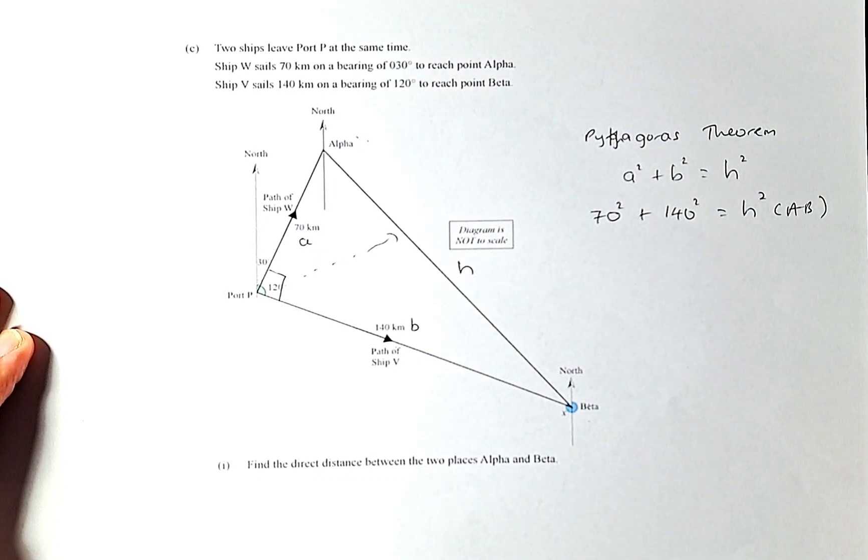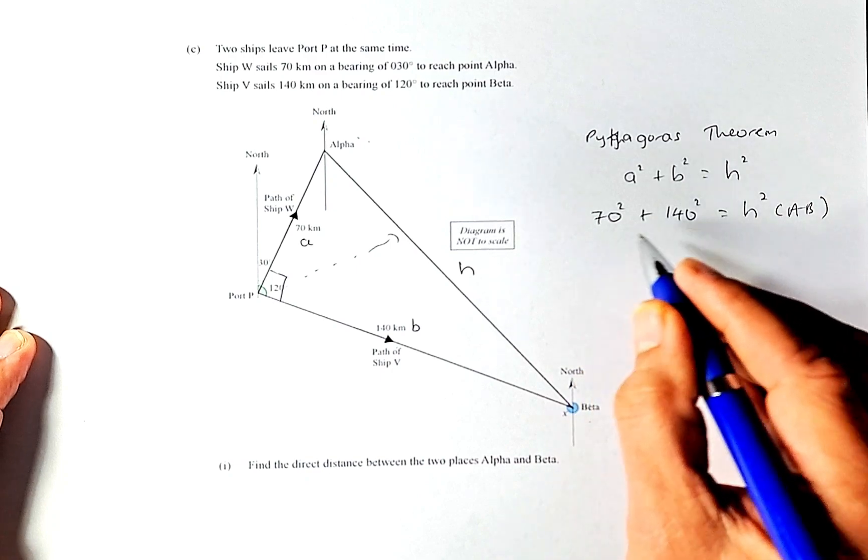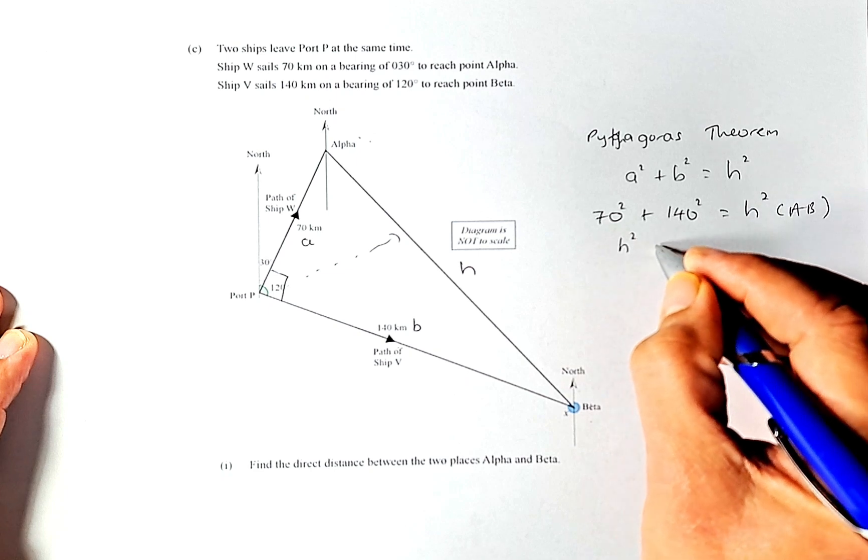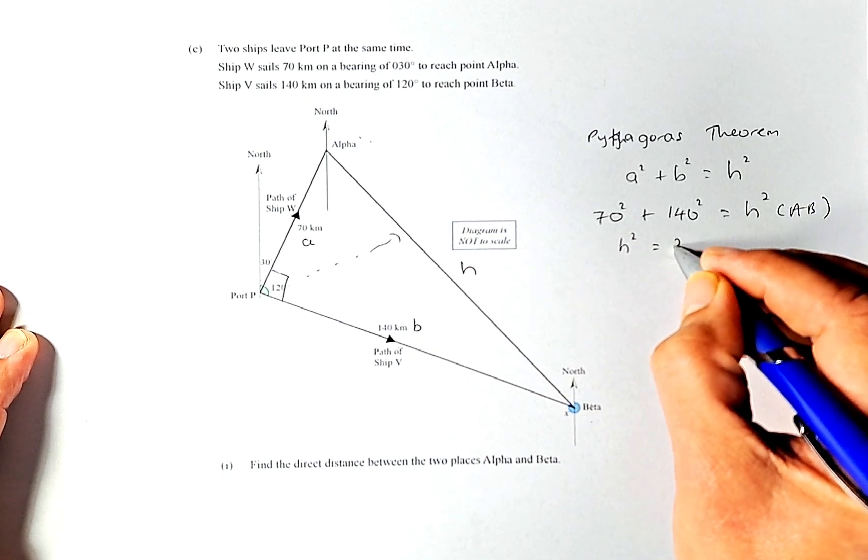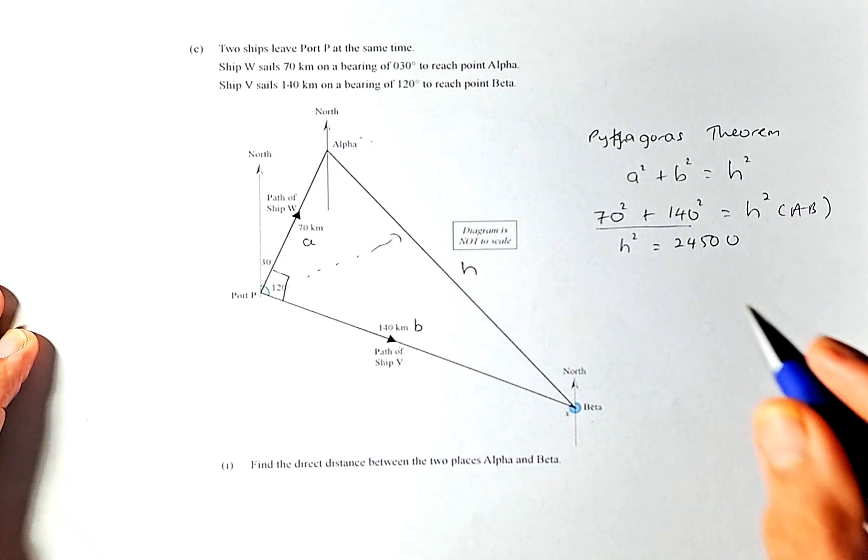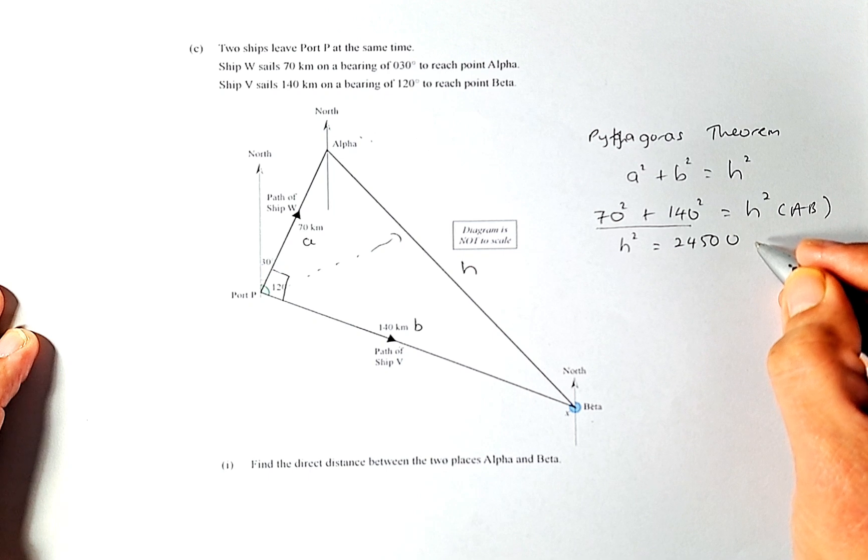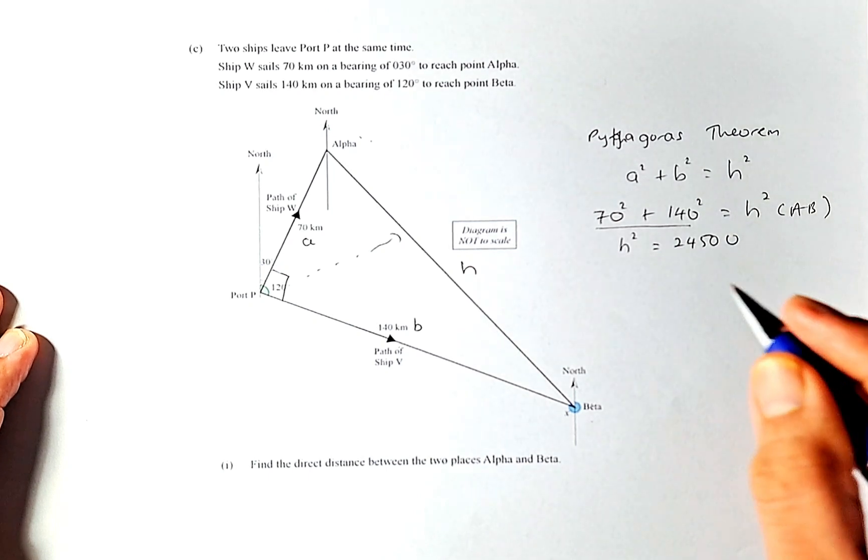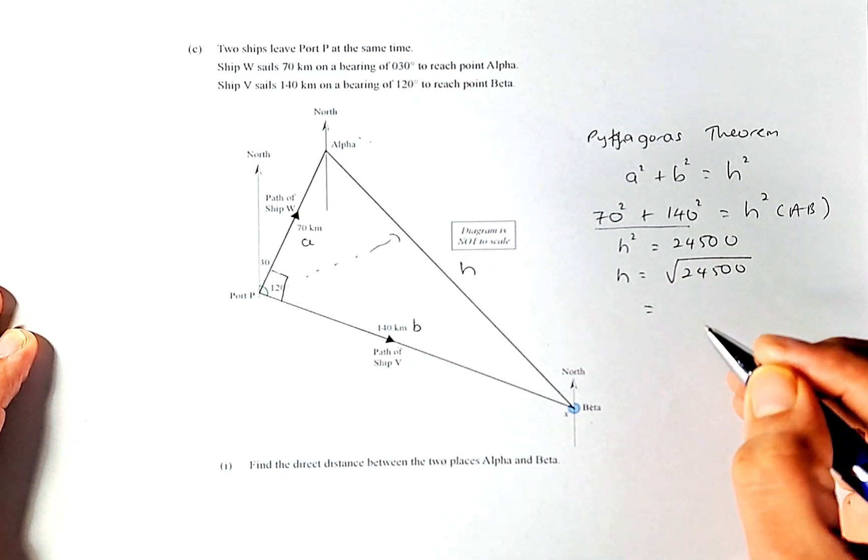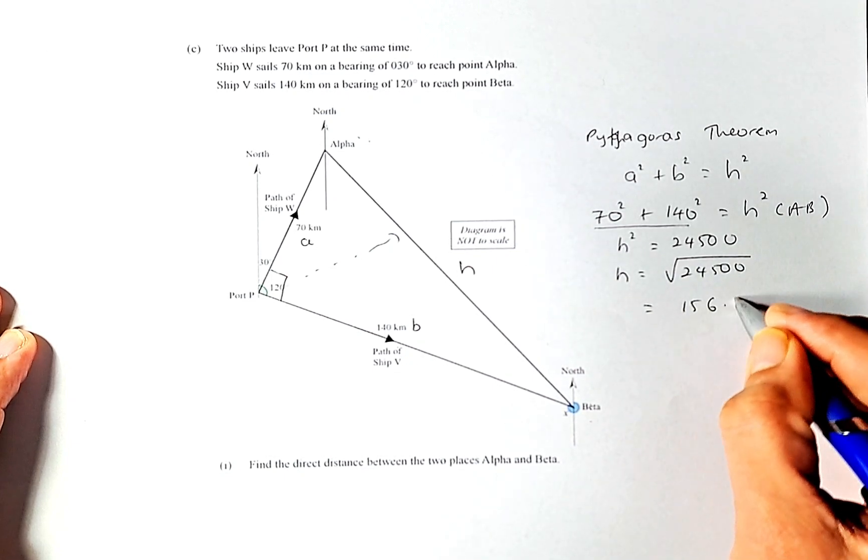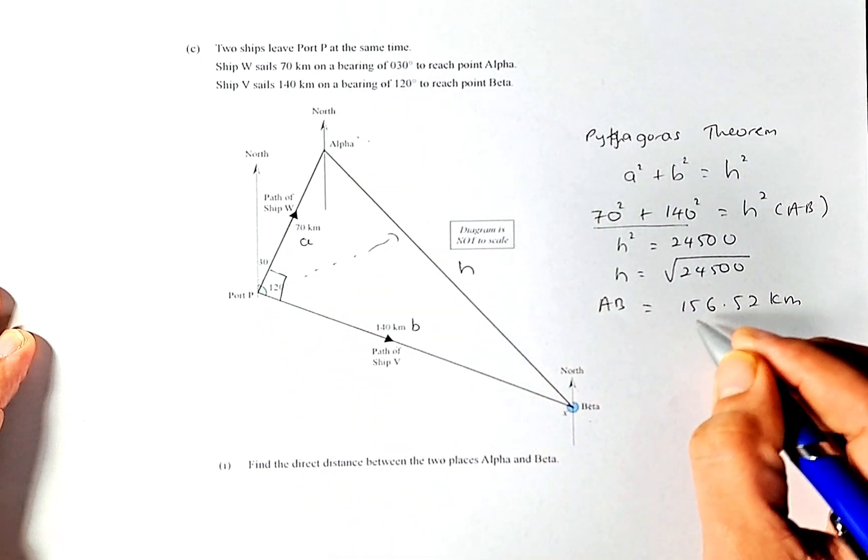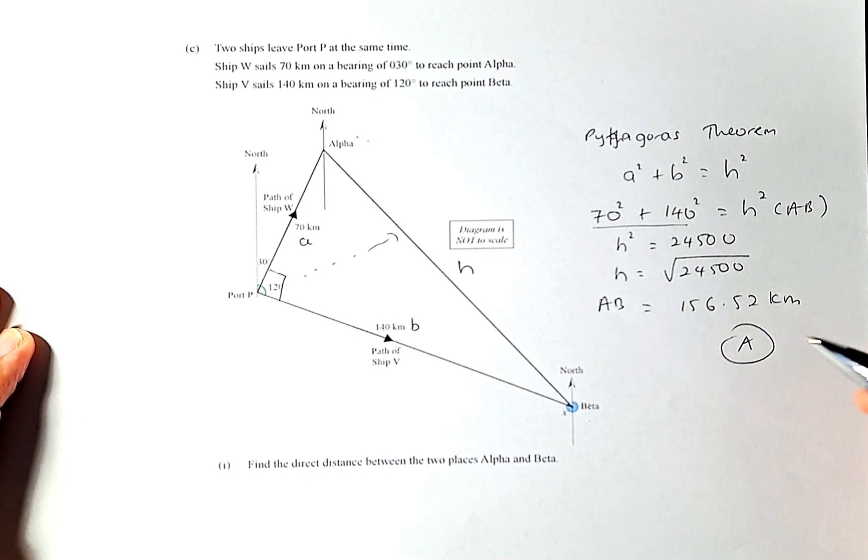Now we're going to use the calculator: 70 squared plus 140 squared. The answer is going to be h squared equals 24,500. To get your h you just need to square root the answer 24,500 and the answer is going to be 156.52 kilometers. So the length AB is 156.52 and that is an achieved skill.